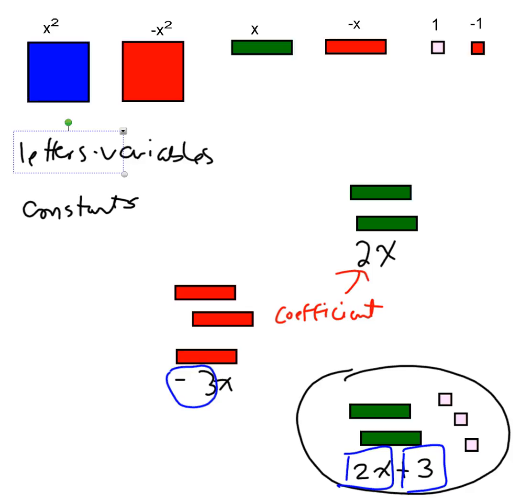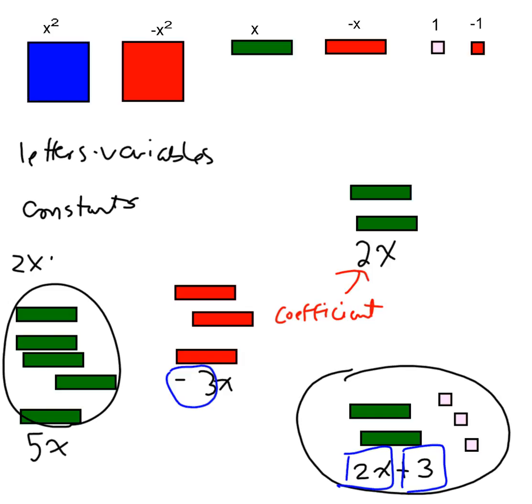Therefore, we can't add them. We cannot add 2x and 3 together. We could add 2x and 3x together. For example, if I had 2 x's there, and I added 3 more x's, I now have that in total, I have 5 x's. I can add 2x plus 3x, but I cannot add 2x and 3. They are not like terms.